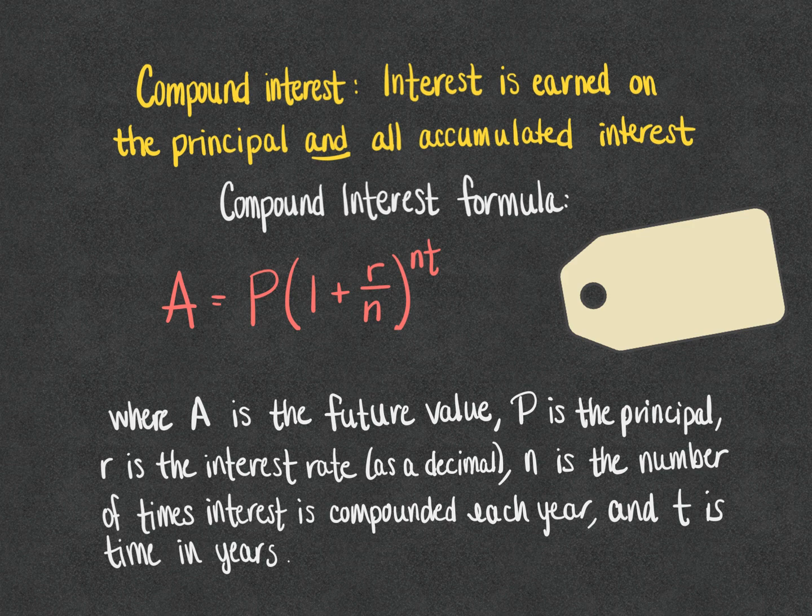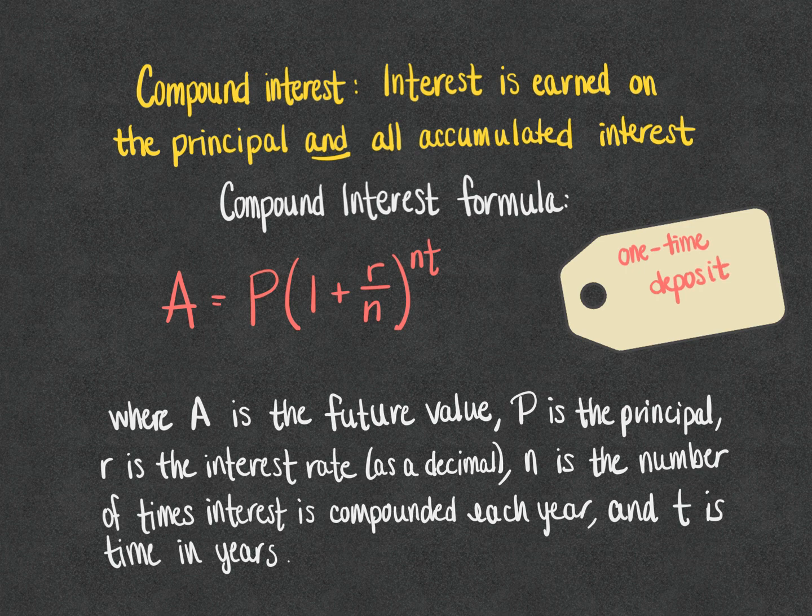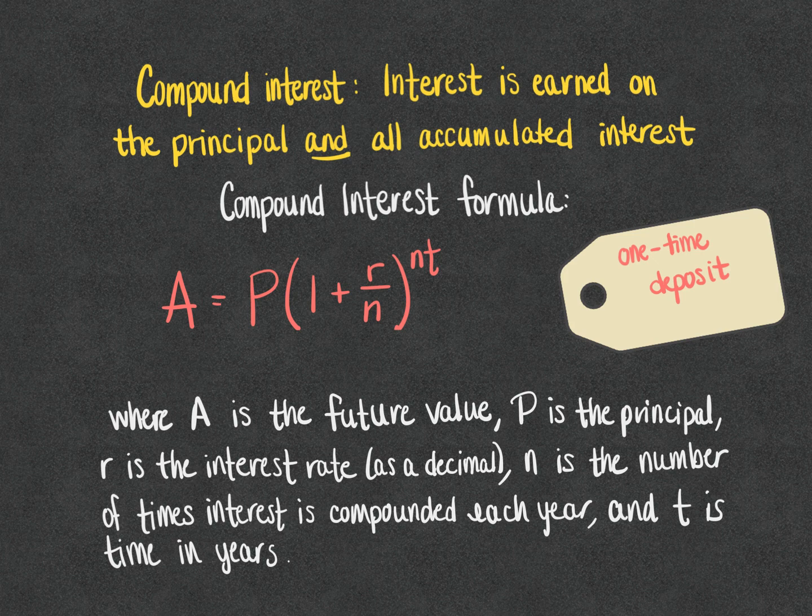You use this formula when you have a one time deposit and when you know interest is being compounded. For our purposes that means you're going to put the money in the account and you're going to walk away and let it sit there earning interest. That's how you will know that this is the formula you should be using.